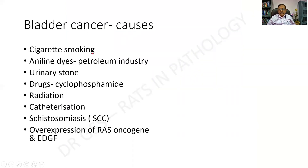Causes of bladder cancer include cigarette smoking, aniline dyes of the petroleum industry, urinary calculi causing repeated irritation leading to malignancy, drugs such as cyclophosphamide, radiation, catheterization, and schistosomiasis — which can lead to squamous cell carcinoma — and overexpression of the Ras oncogene or EGFR. Notably, cigarette smoking causes not only lung cancer but also bladder cancer.